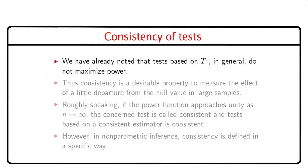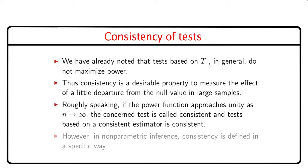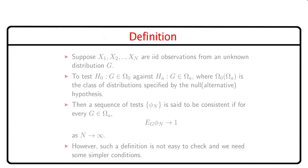Non-parametric tests are often developed from intuitive justification and hence are far from being optimal. Consistency is therefore an important concern to measure the sensitivity of the test to a little departure from the null value in large samples. Roughly speaking, if the power function approaches unity as n tends to infinity, the concerned test is called consistent. In fact, as we increase n, we get more and more information, and hence our decision is likely to become more accurate. However, in non-parametric inference, consistency is defined in a specific way.